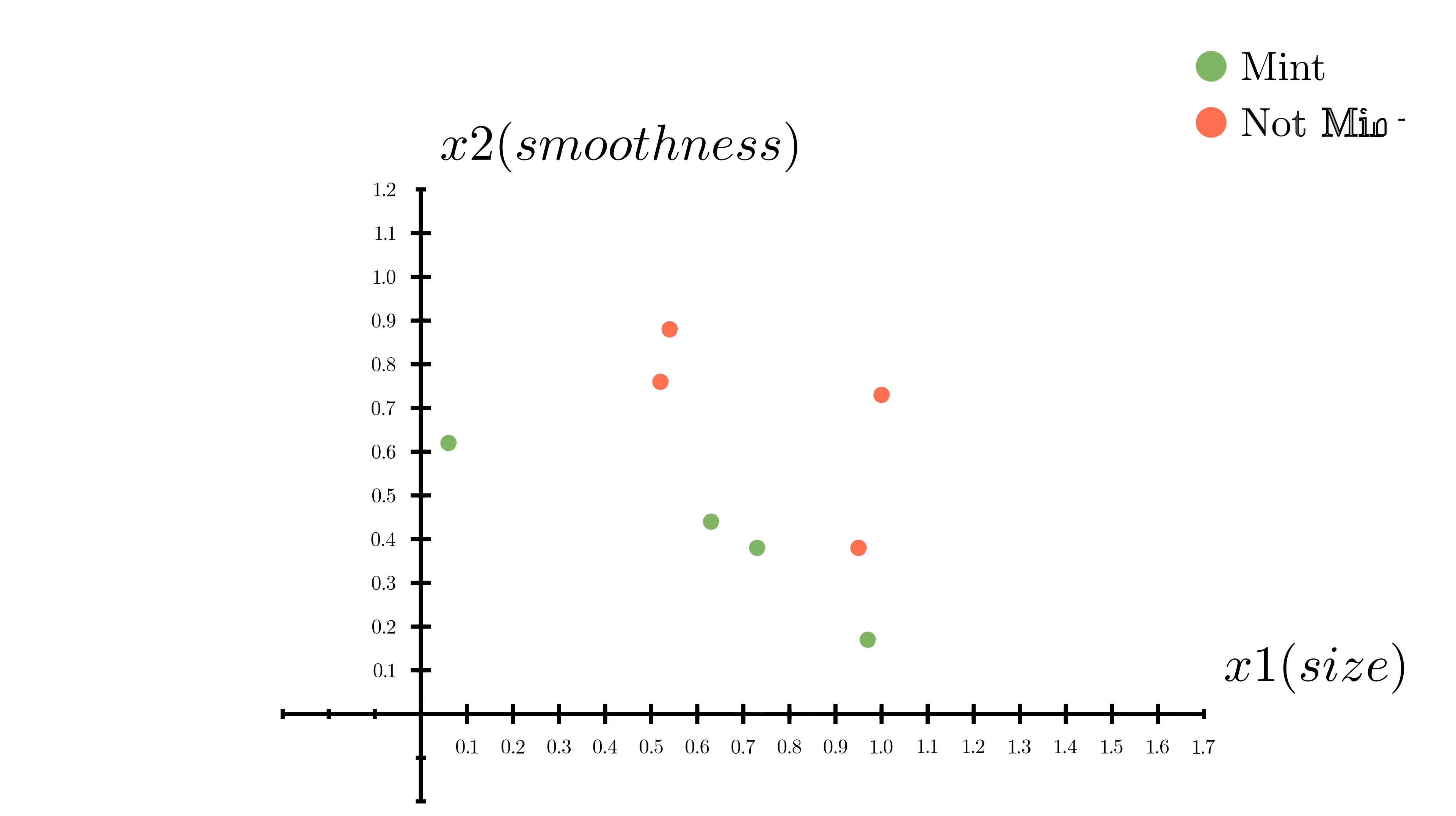The second thing to note about the mints data set is that there's a lot of different lines we could have picked to separate the data. We arbitrarily chose this one, but we could have picked this one, or this one, or this one. Of the infinitely many lines that separate the data, one line of particular interest is this one because it goes right down the middle of the gap between red and green dots. This is what's known as a maximum margin classifier because it has the biggest possible margin on both sides. Finding this guy is the objective for support vector machines, aka SVMs. Unlike support vector machines, perceptrons aren't so needy. The goal of a perceptron is just to find any line that separates the classes.